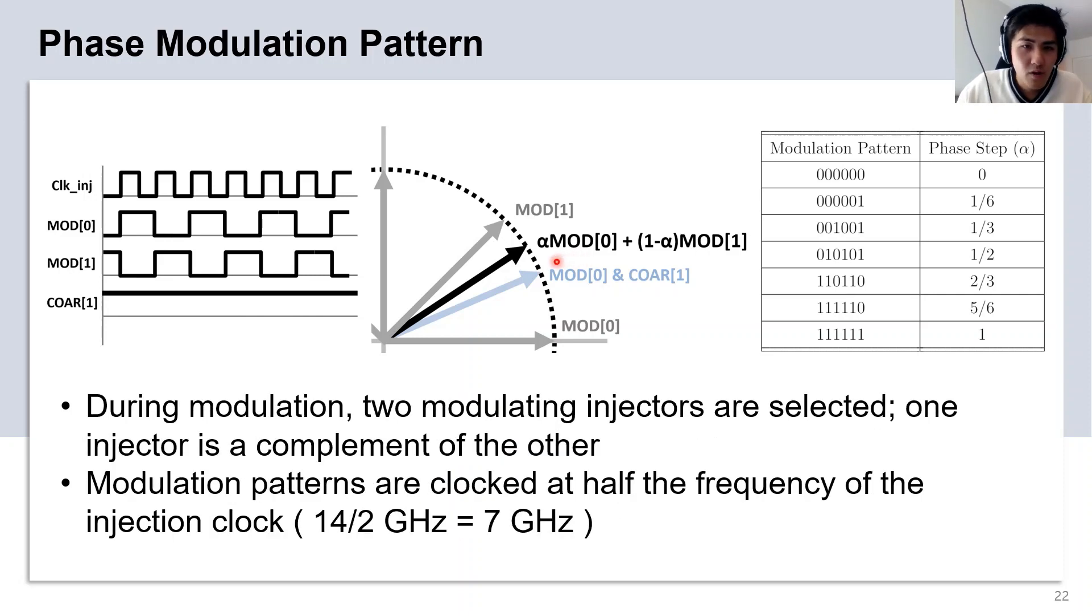To perform a phase modulation, we want to first choose a coarse phase injector, and then the two adjacent modulating injectors will be switched on and off in complementary of each other to perform phase modulation. The modulation patterns are clocked at half the frequency of the injection clock.